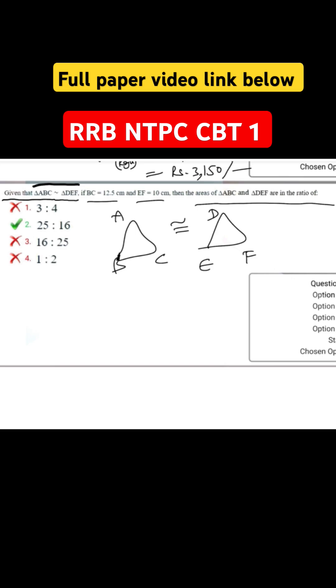Applying similarity rule, as we know that the rule of similarity implies AB by DE is equal to AC by DF is equal to BC by EF.